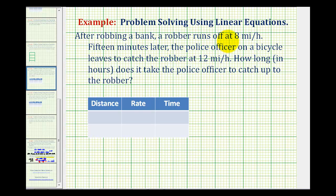After robbing a bank, a robber runs off at 8 miles per hour. Fifteen minutes later, the police officer on a bicycle leaves to catch the robber at 12 miles per hour. How long in hours does it take the police officer to catch up with the robber?